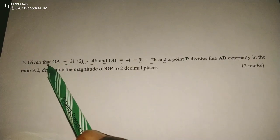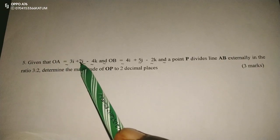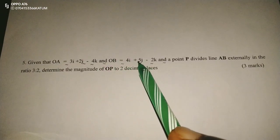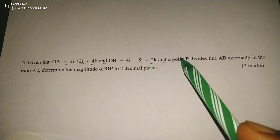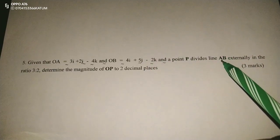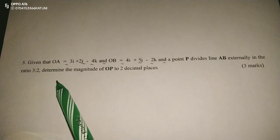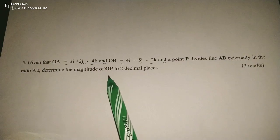We are told that given that vector OA equals 3i + 2j - 4k and vector OB equals 4i + 5j - 2k and a point P divides line AB externally in the ratio 3 is to 2, determine the magnitude of OP to 2 decimal places.